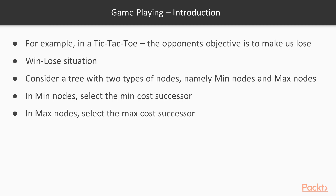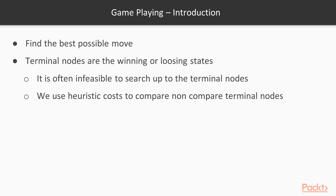By performing lookaheads we search the game tree. The tree has two types of nodes: min nodes, representing our opponent's options, and max nodes, representing our moves. At min nodes we select the minimum cost successor, and at max nodes we select the maximum cost successor. We are only looking ahead and doing computations in memory to find the best move.